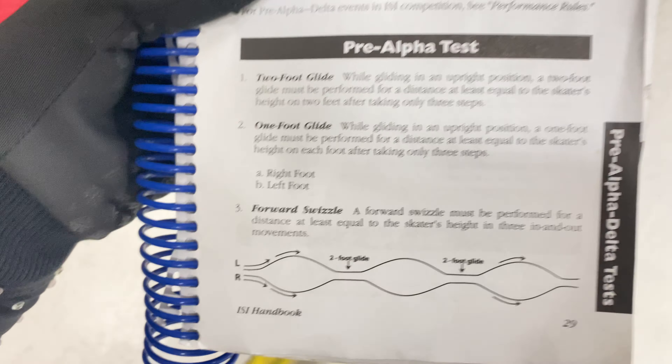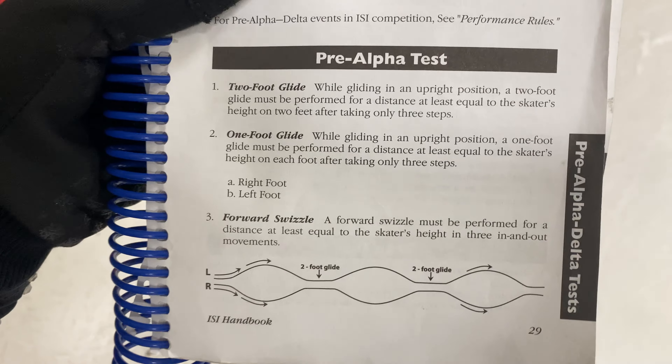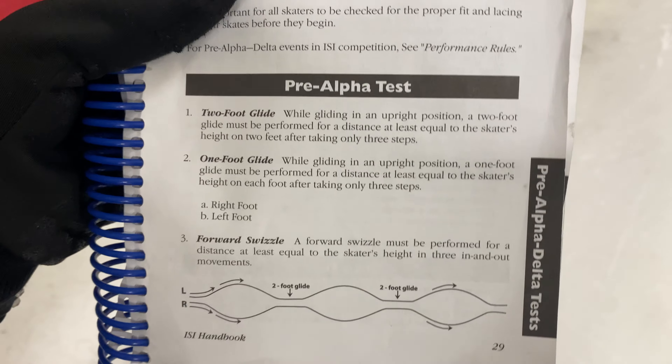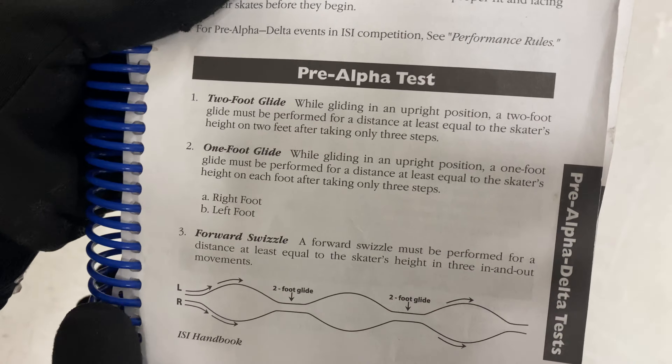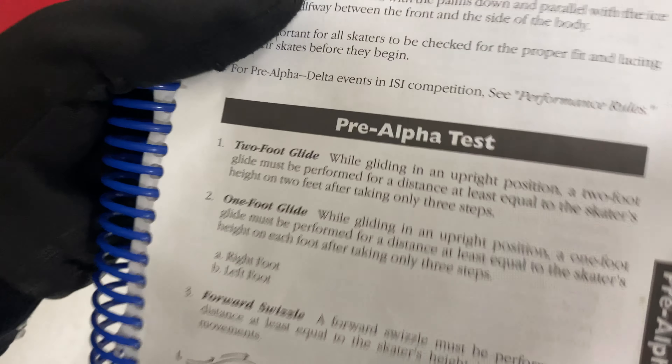I will start with a two-foot glide. While gliding in an upright position, a two-foot glide will be performed for a distance at least equal to the skater's height on two feet after taking away three steps.